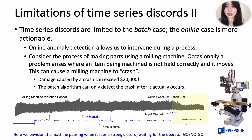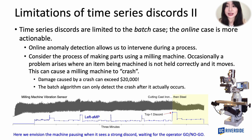In addition to train freaks, time series discords are limited to the batch case. However, in some cases, if we can do anomaly detection online, we may be able to intervene during the process. For example, consider the process of making parts with a milling machine. If the item being machined is not held properly and moves, this can cause the milling machine to crash, causing up to $20,000 in damages. Methods that only support the batch case cannot stop this crash — they can only detect it after it actually occurs. Therefore, if we had an online method that can monitor the process and pause when it detects an anomaly, we may be able to avoid this expensive crash.